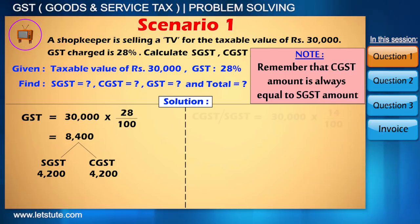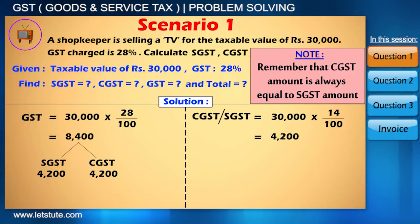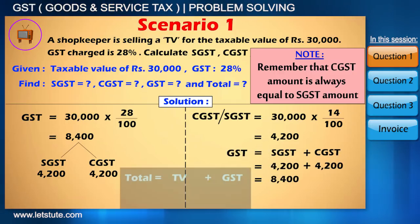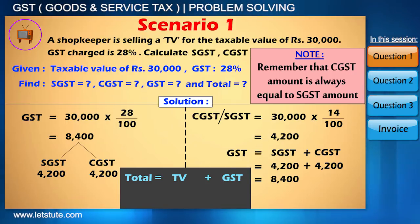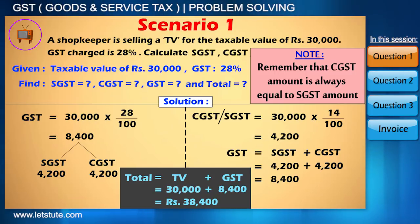Alternatively, we can calculate 14% of 30,000, which is 4,200, and then the same amount can be allocated for CGST. Because the amounts for SGST and CGST are the same, they total 8,400 as GST. So if you want to buy that TV, you will have to pay 30,000 plus 8,400 GST, and in total it becomes Rs 38,400. This is how GST is calculated on a product.